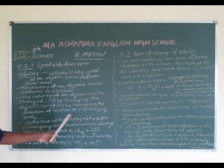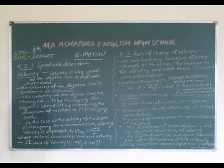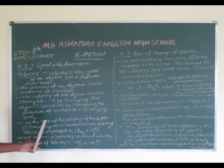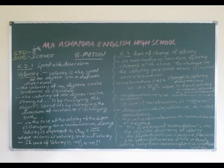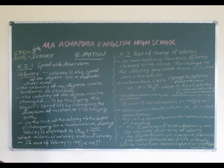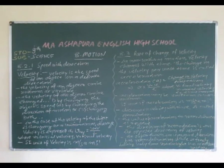In the case where the velocity of an object is changing at a uniform rate, then average velocity is expressed as: v_average = (u + v) / 2, where u is called the initial velocity and v is called the final velocity. The SI unit of velocity is meter per second, same as the unit of speed, or written as m s⁻¹.